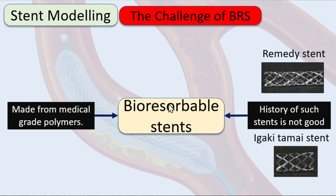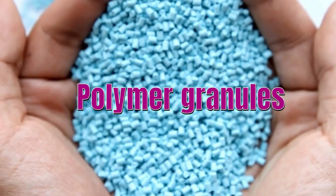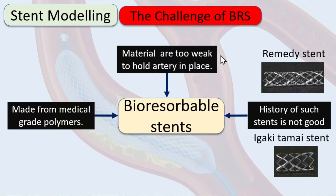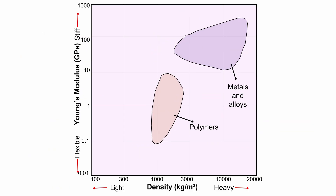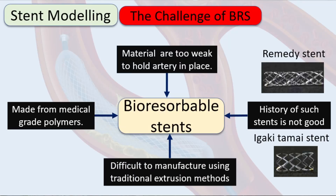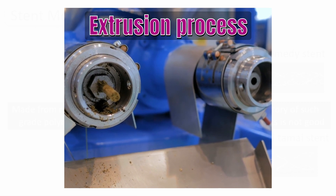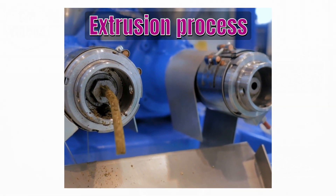Another challenge is that while some bioresorbable stents are made from metal, a major number are made from medical-grade polymer. Polymers are weak compared to metals, so the stent may not be able to hold the artery in place. It is also difficult to manufacture very small stents using polymer-based materials, because traditional manufacturing methods for stents differ from polymer processing, and traditional extrusion methods do not work well.